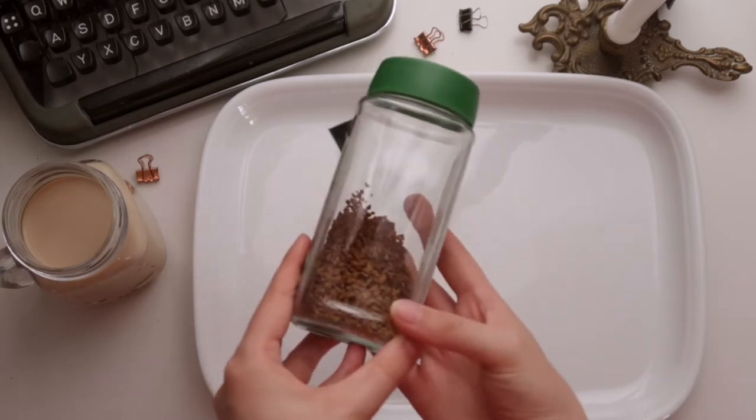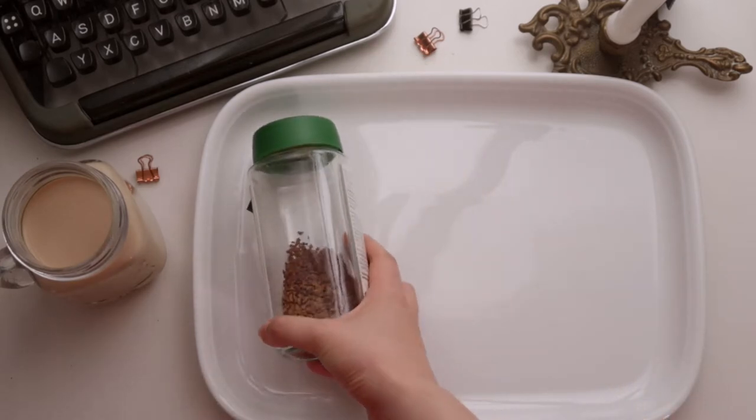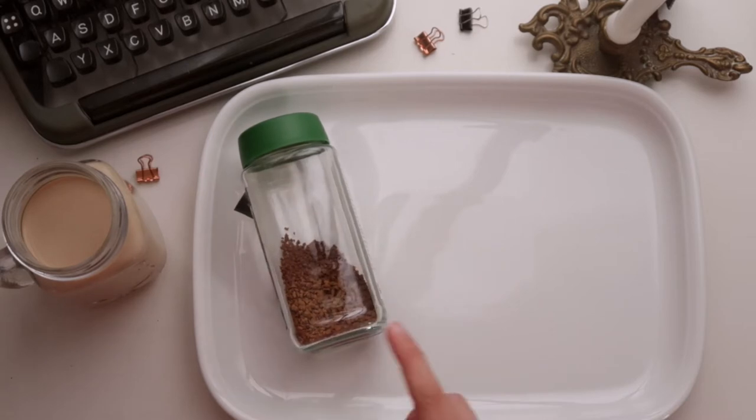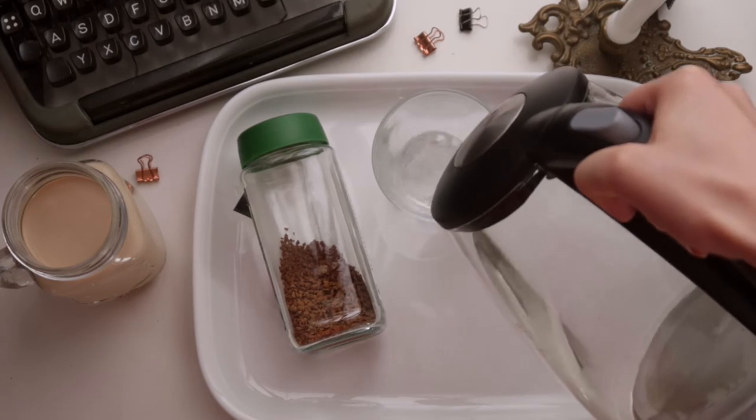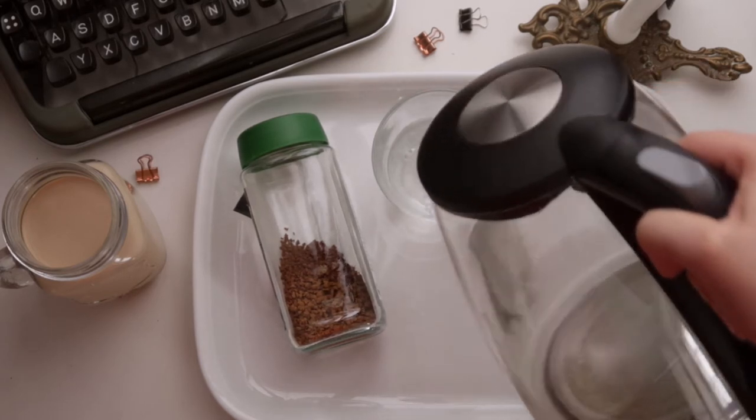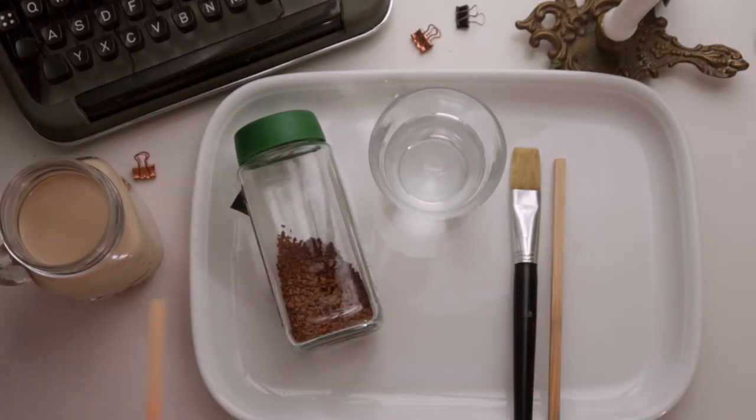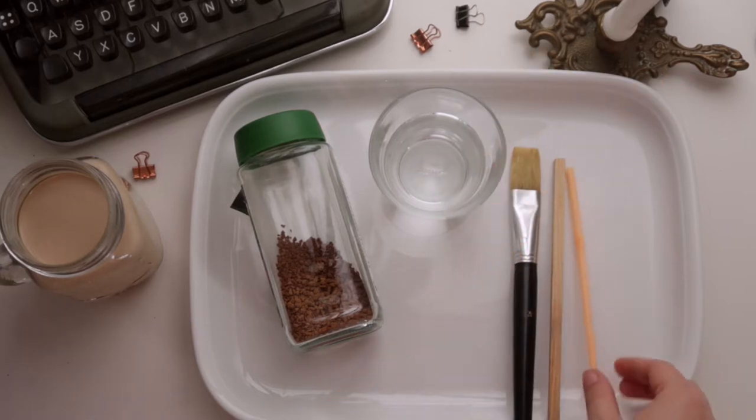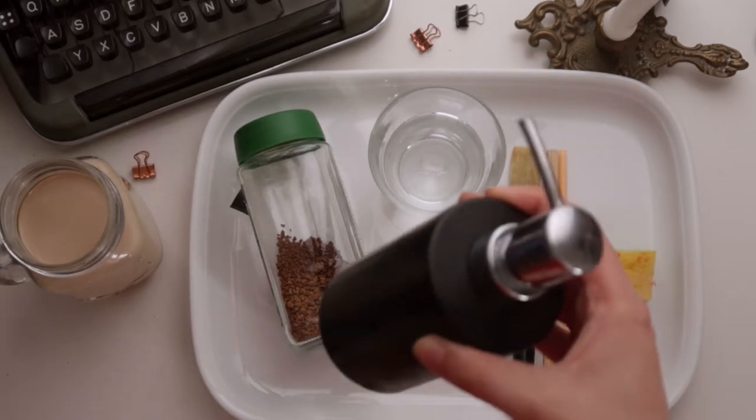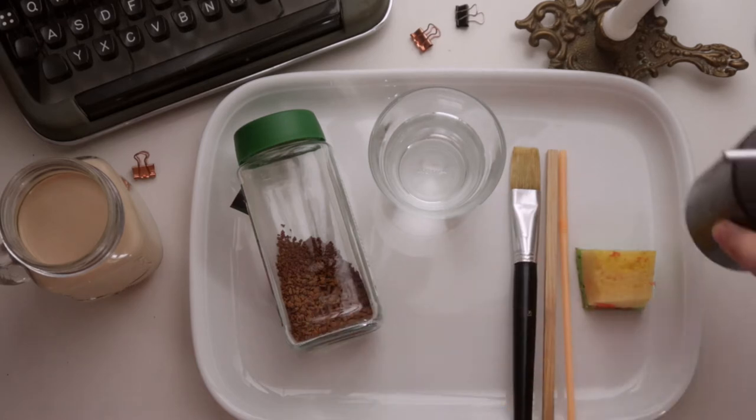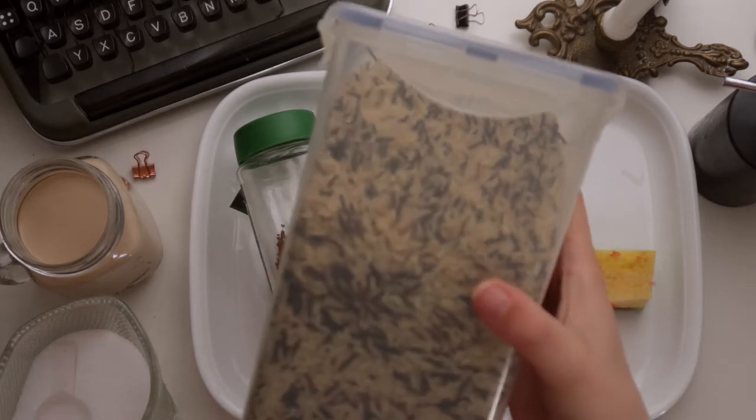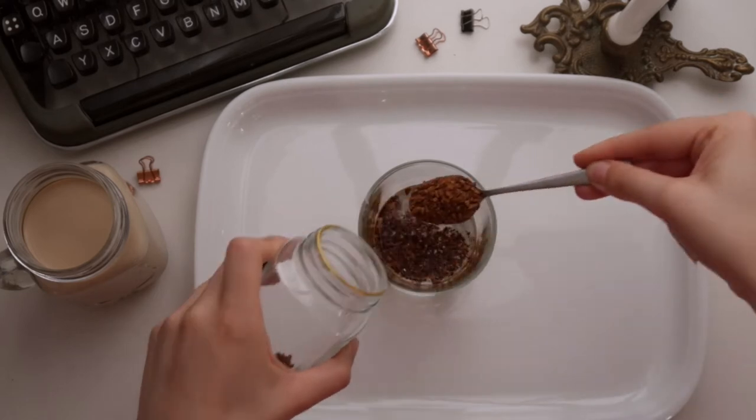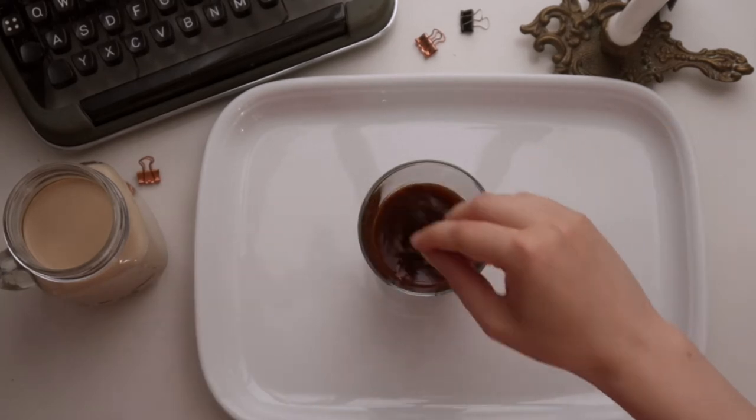Now on to the stuff we need for today's DIY. Obviously we will need some instant coffee, a jar or a mug with some hot water, a square wooden stick, a straw, a sponge, some dish soap, some salt, some rice and obviously some white paper as our base to start off with.